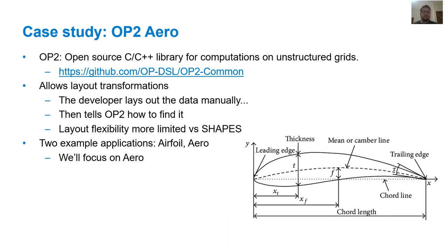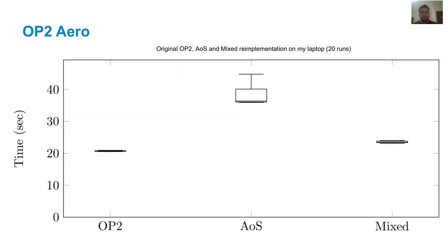We'll only present results of execution on my laptop for Aero. The chart shows a box plot of 20 executions of Aero for the original OP2 implementation, its equivalent Shapes implementation with a mixed layout and an AOS layout. As we can see, the mixed layout outperforms the AOS layout and our implementation is only a bit slower compared to the original OP2 version. Hence, we should expect Shapes to have comparable performance.